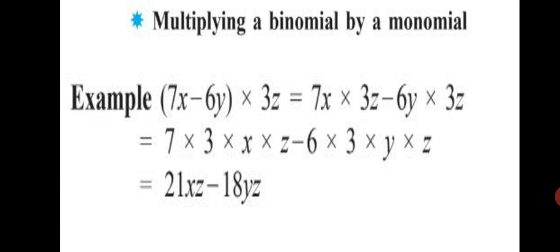This is how you multiply a binomial by a monomial. From the bracket you take the first term and multiply it with the monomial outside, then take the second term out along with its sign and multiply it with the monomial outside, and solve accordingly.